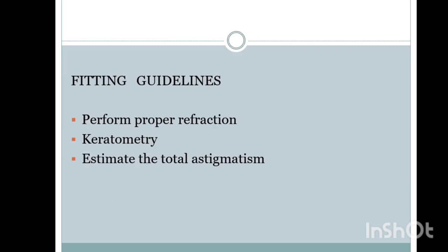What are the fitting guidelines? We need to do a proper refraction — that is very important. Keratometry is also very important because based on the keratometry reading only, you will choose the base curve of the RGP contact lens. Do a proper keratometry, estimate the total astigmatism, correlate the spherical and cylindrical error from subjective refraction with the keratometry readings — that will give you the total astigmatism.